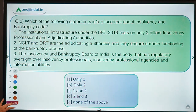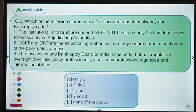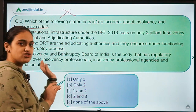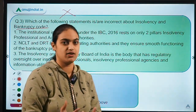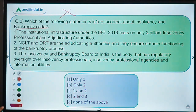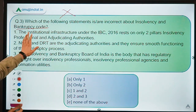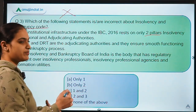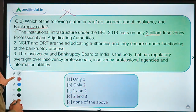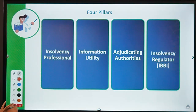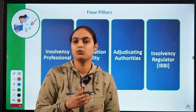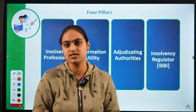Let's move on to question number three, which asks us to identify the incorrect statements about the bankruptcy code. The first statement mentions the institutional infrastructure under IBC resting on two pillars. Before reading further, let's discuss the pillars of IBC. There are four pillars — also called important features. The first pillar is insolvency professionals. A professional person is appointed under this code to help in the resolution process, whether by running the business or selling off assets.